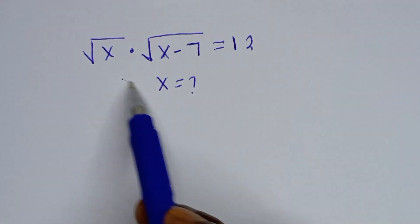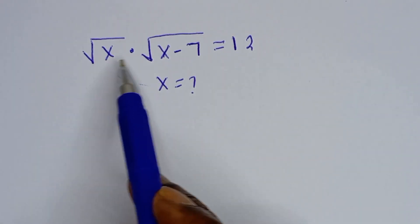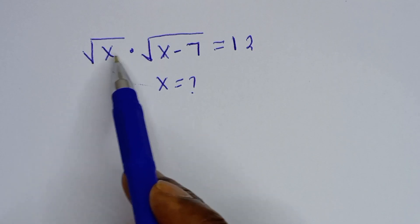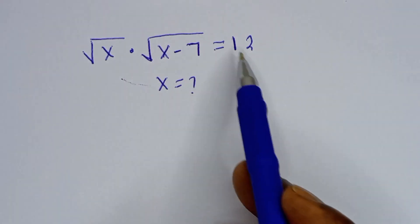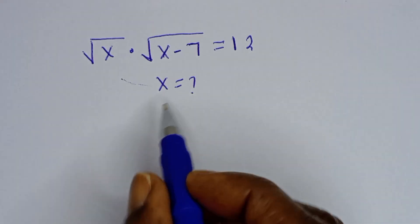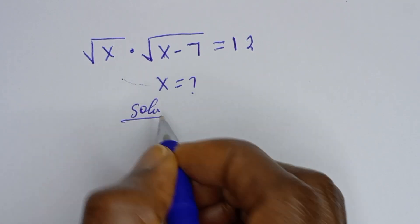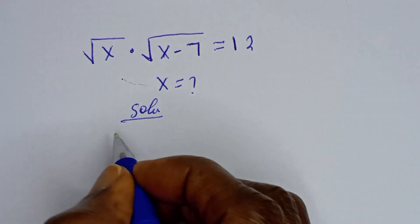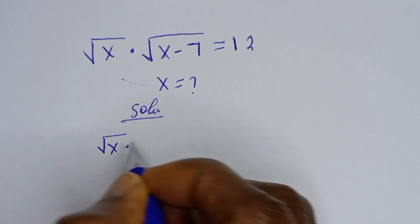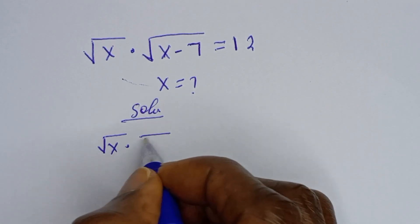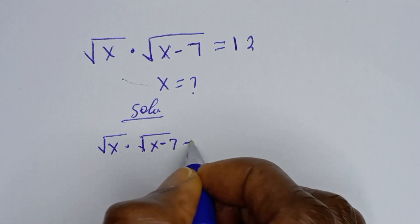Hello. How to solve for s from this math problem: square root of s multiplied by square root of s minus 7 is equal to 12. Solution: square root of s multiplied by square root of s minus 7 is equal to 12.